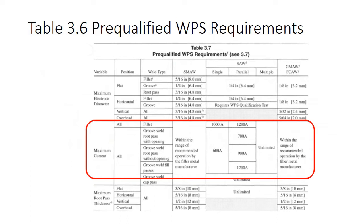Here's an example of that table. I took this out of 2010, which I think was table 3.7, but it's the same table. What I'm looking at in red is within the range of recommended operation by the filler metal manufacturer for stick welding, maximum current. How do I know on a pre-qualified WPS what range to give these guys?